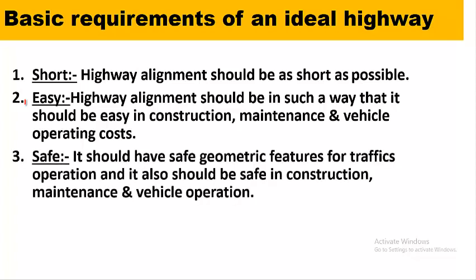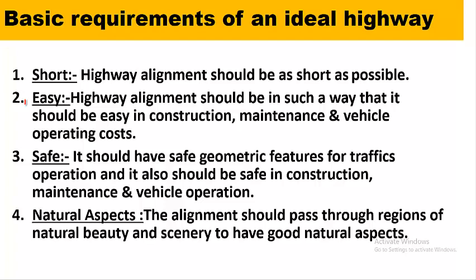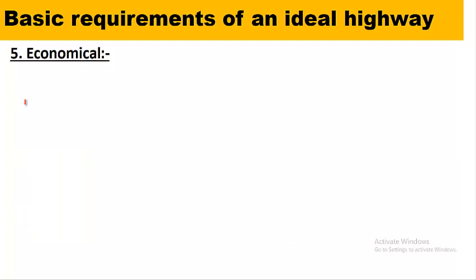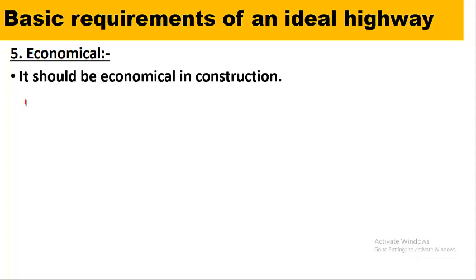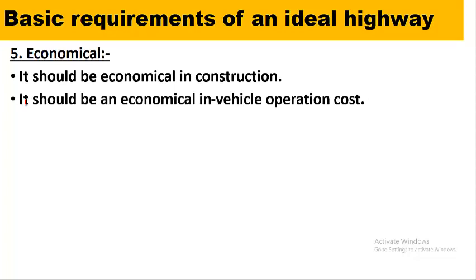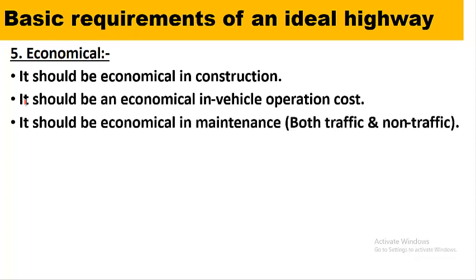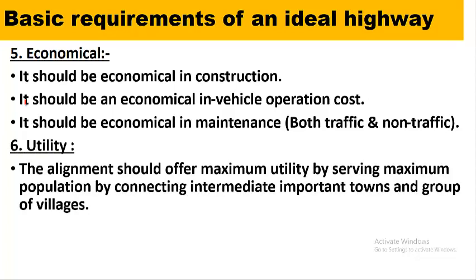Third, it should be safe — it should have safe geometric features for traffic operation and be safe in construction, maintenance, and vehicle operation. Fourth, it should consider natural aspects — the alignment should pass through regions of natural beauty and scenery. Fifth, it should be economical in construction, vehicle operation cost, and maintenance. Sixth, the alignment should offer maximum utility by serving maximum population, connecting intermediate important towns and groups of villages.